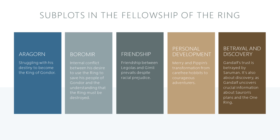Firstly, there is Aragorn's subplot. Aragorn is struggling with his destiny to become the King of Gondor. He is reluctant to assume this role due to the past failures of his lineage. Yet throughout the story, we see him gradually step up to the responsibility and start to embrace his destiny. Then we have Boromir's subplot. He is torn between his desire to use the ring to save his people of Gondor and the understanding that the ring must be destroyed. This internal conflict eventually leads to his downfall, but also his redemption.